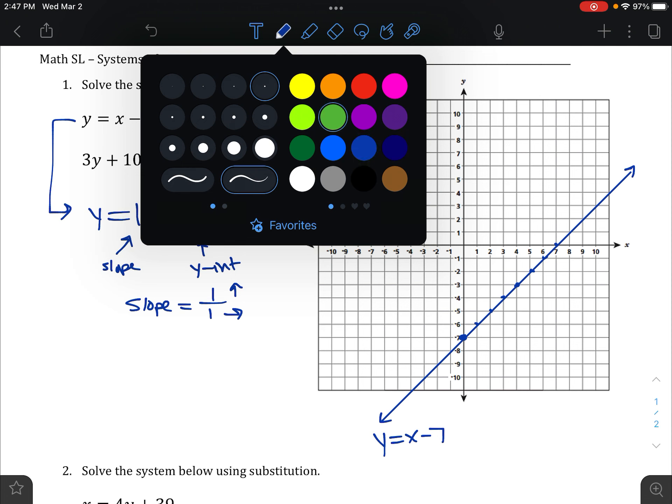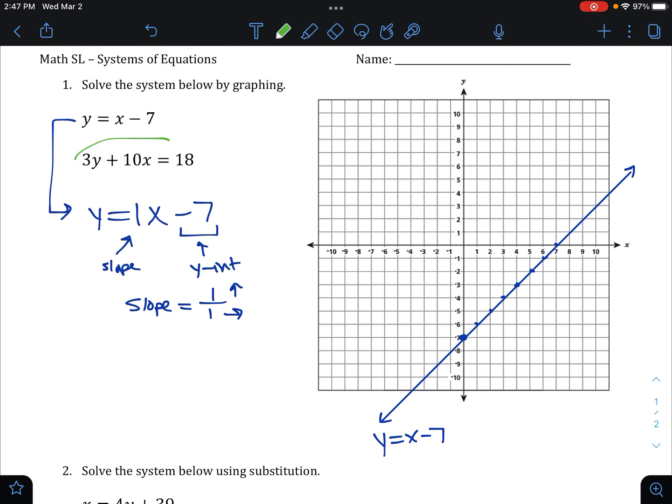Our next one, we're going to do this very similar work here to graph this. The only problem is, this is not in terms of y. y is not by itself yet. So we have to do what we call solving for y in order to first get it into that form that we need.